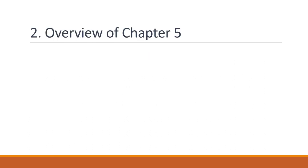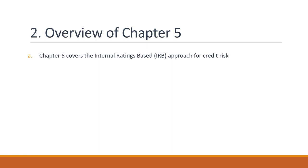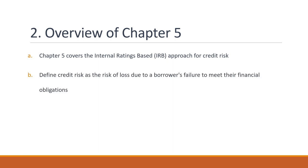Overview of Chapter 5. Before we dive into the specifics of Chapter 5, let's start with an overview. Chapter 5 provides guidance on how banks should measure and manage credit risk using the IRB approach. Credit risk is the risk of loss due to a borrower's failure to meet their financial obligations.